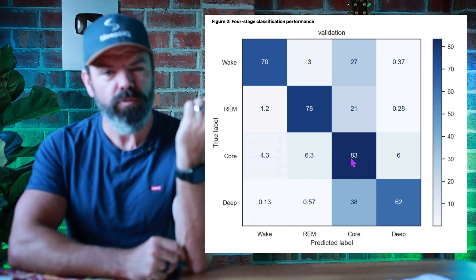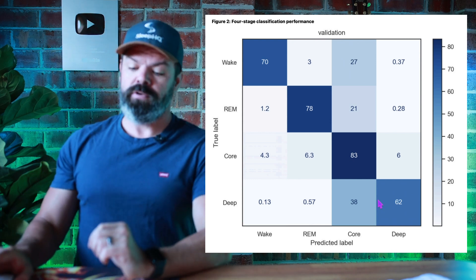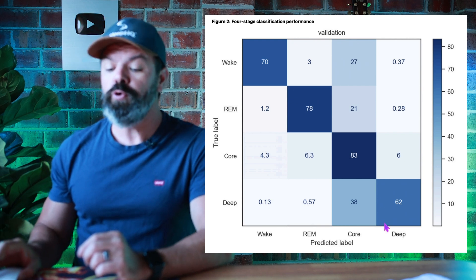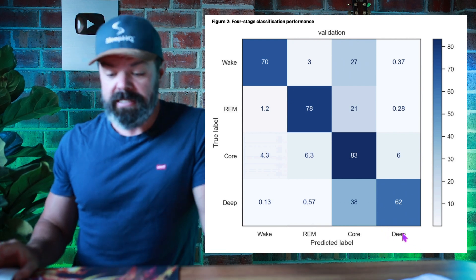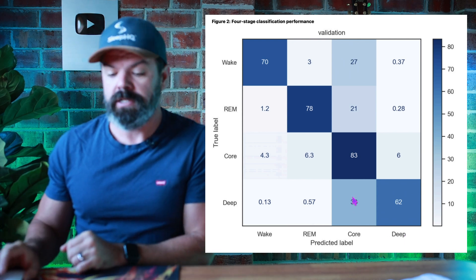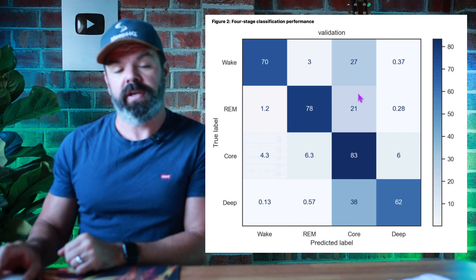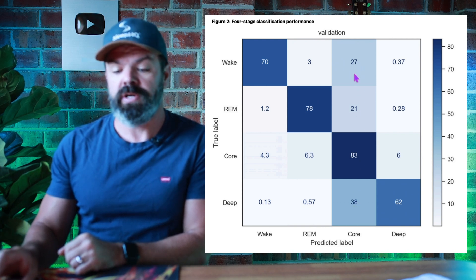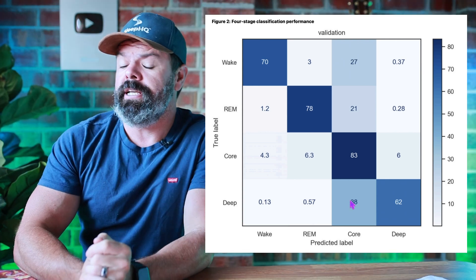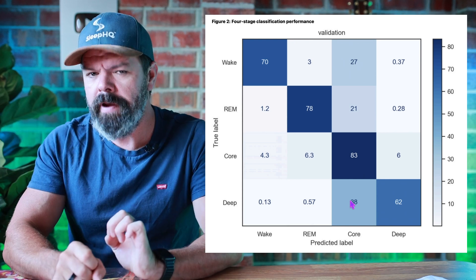I'm pretty impressed considering this is coming from breathing motion — little breathing patterns — that's just insane. The most common misclassification is true deep sleep being classified as core sleep. In fact, core sleep is the biggest misclassification overall: 27%, 21%, and 38% across wake, REM, and deep sleep rows.